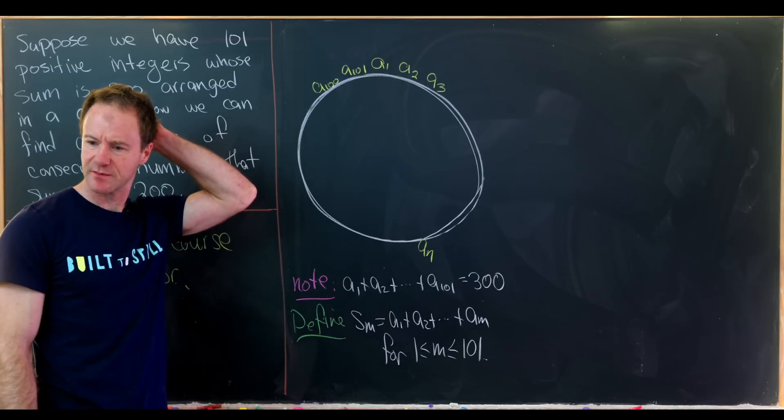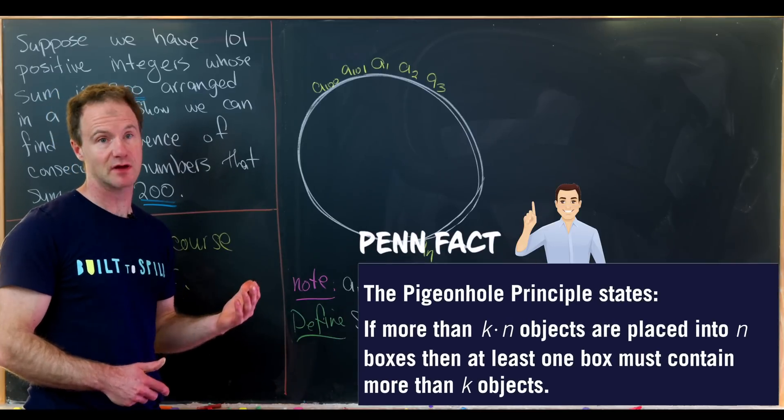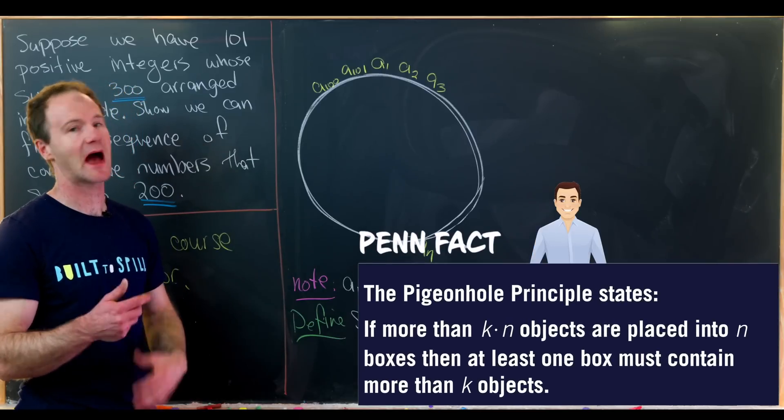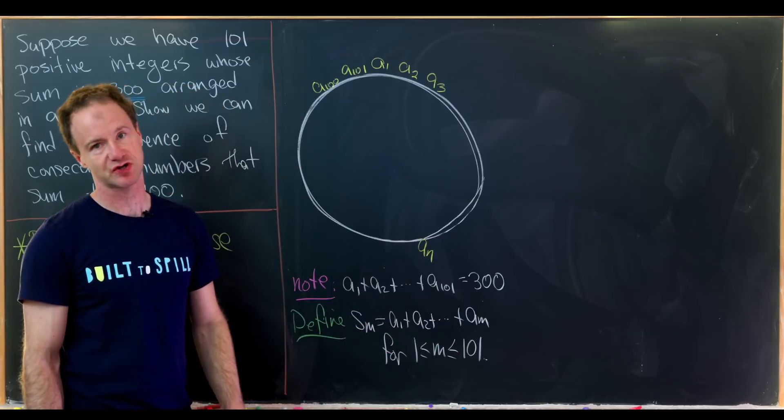And now here's where we're going to use something called the pigeonhole principle. You don't have to know what that really means for this problem because we'll talk our way through how it works. So notice we've got 101 numbers which are these partial sums.